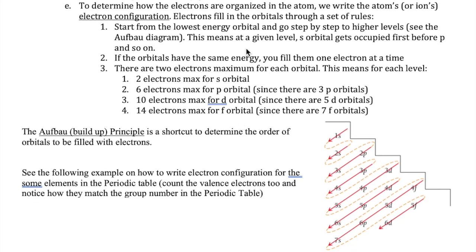The last rule is that we can only have a maximum of two electrons per orbital. So if we have three P orbitals, we can have a maximum of six electrons. If we have five D orbitals, we can have a maximum of ten electrons, and if we have seven F orbitals, we can have a maximum of 14 electrons.